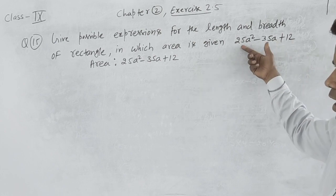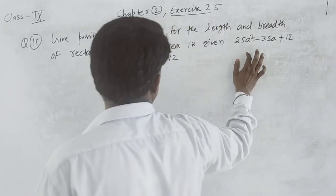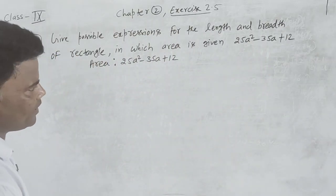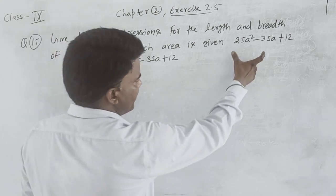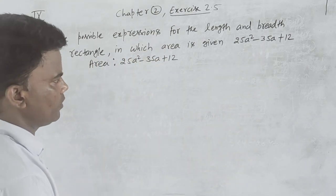Length and breadth - you have the quadratic polynomial form given. It means the length and breadth, when we find the factors, one will be length and one will be breadth.